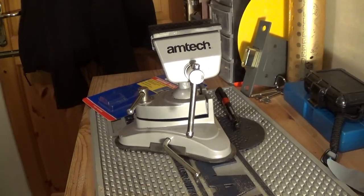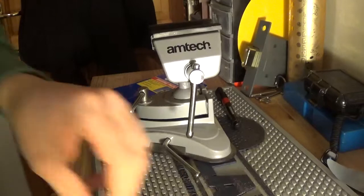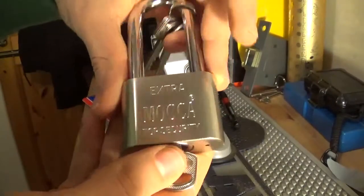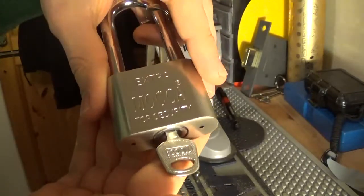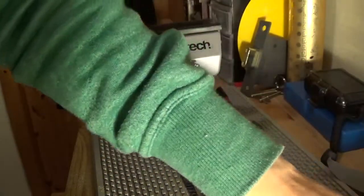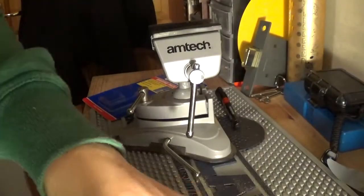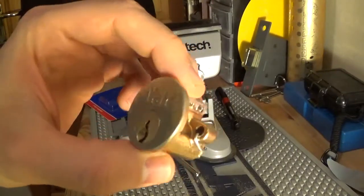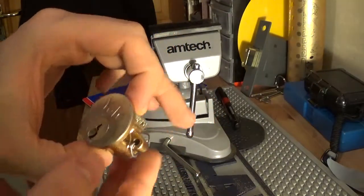Okay, so just a few things before I get started. Here's my disk detainer padlock I'll be sending to Foxy first, and then he can send that on. Also, I've made a challenge lock here I'm going to try to send this to Bosnian Bill.